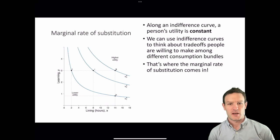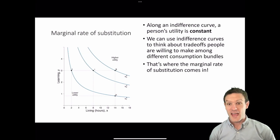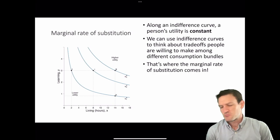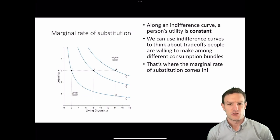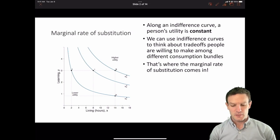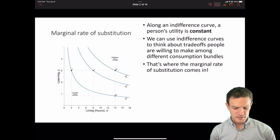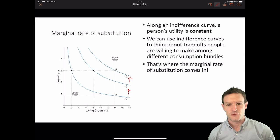Keiko has two things that she likes. She likes living, and that includes leisure and things that she likes doing, and that is along the x-axis of the curve. She also likes learning — for the pleasure of learning itself, but also because she likes being successful with her studies. So both of these things are goods. We can see that U1a is the lowest indifference curve, U2a is intermediate, and U3a is the highest indifference curve.